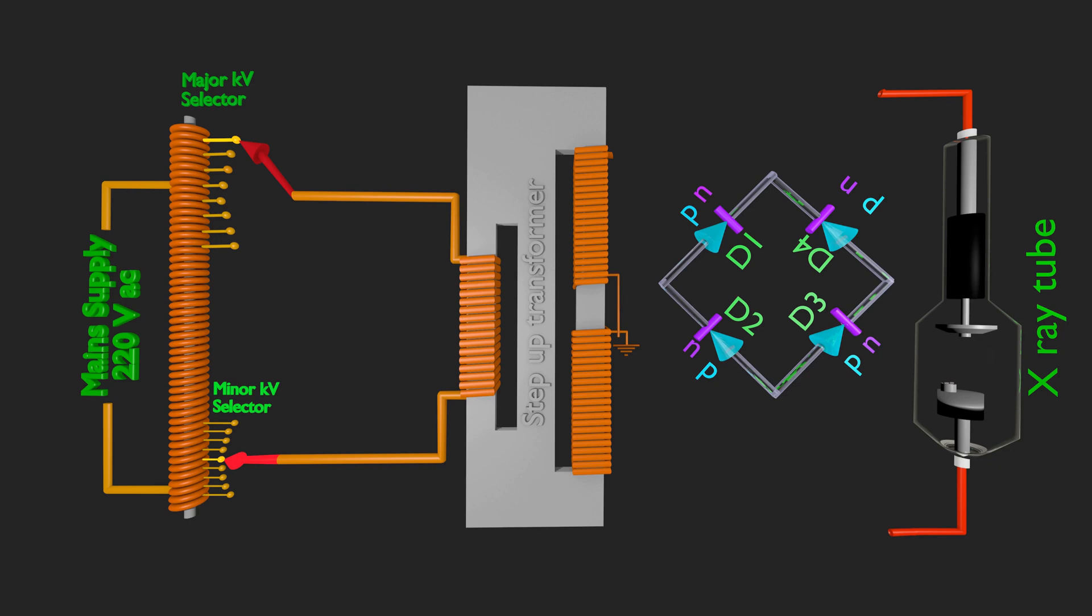A bridge rectifier shown here consists of 4 PN junction diodes D1, D2, D3, D4. Bridge rectifier takes input from secondary of step-up transformer. An X-ray tube is connected to the output of bridge rectifier.